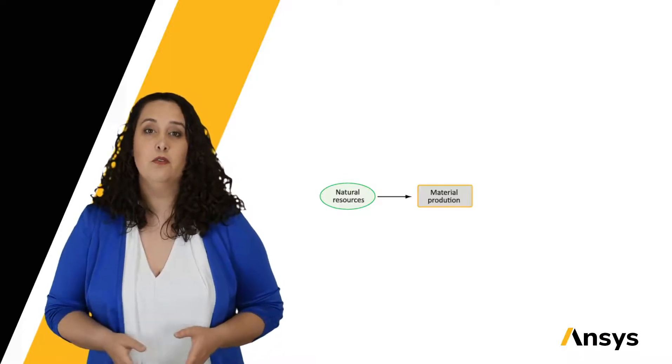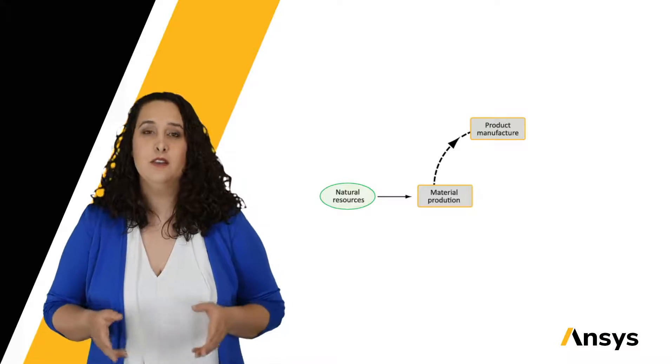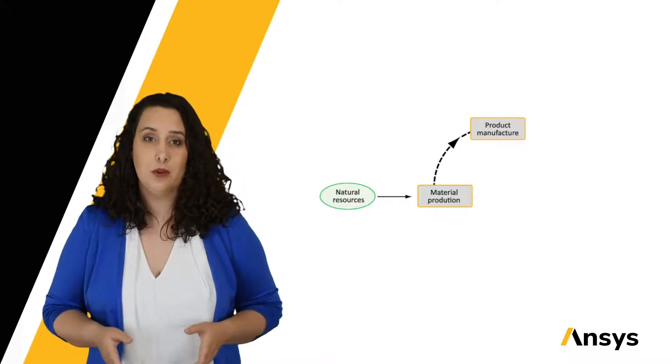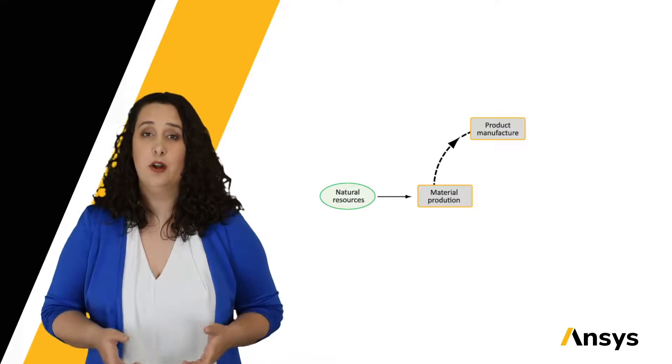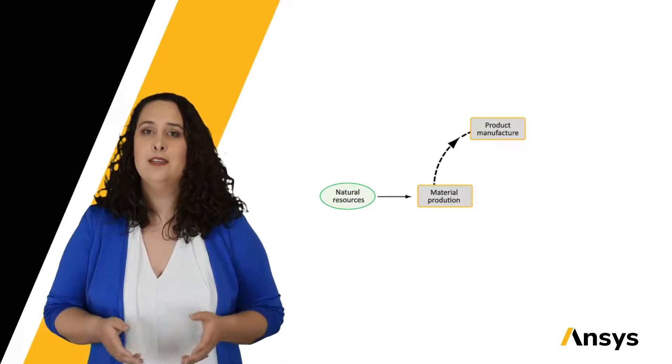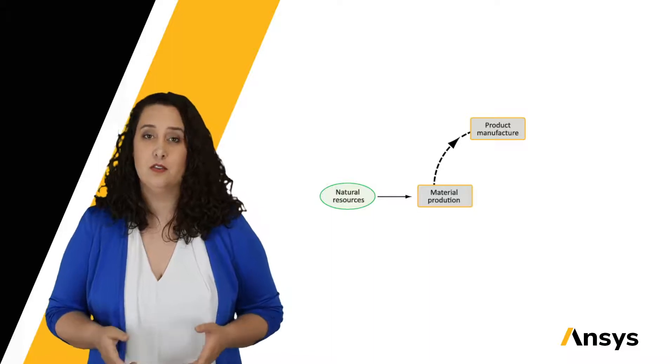Next, we move on to product manufacturing. This encompasses stages two and three from lesson one, where we are changing the shape of our material, processing it to form our product, and taking care of any final details like surface finish.